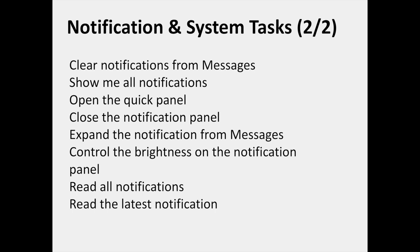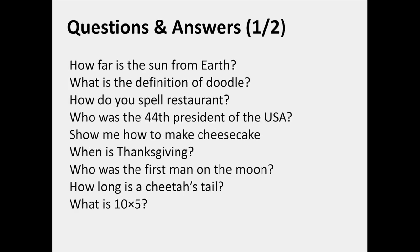For notification and system tasks, you can say: show me my most recent app in split screen view, close messages, close all recent apps, open messages in split screen view, show me my recent apps, open this app as a pop-up, minimize this app, clear notifications from messages, show me all notifications, open the quick panel, close the notification panel, expand the notification from messages, control the brightness on the notification panel, read all notifications, or just read the latest notification.